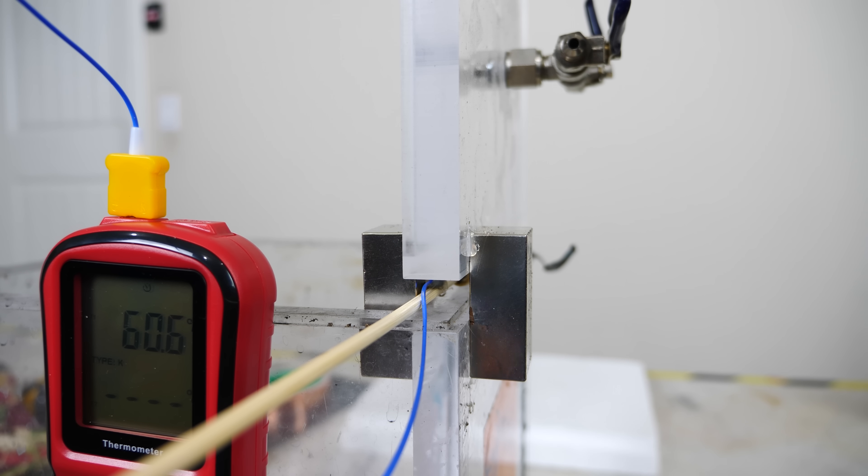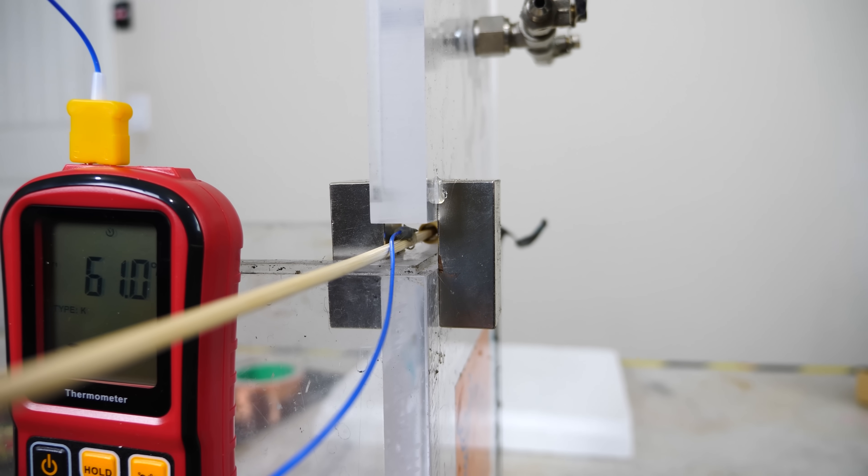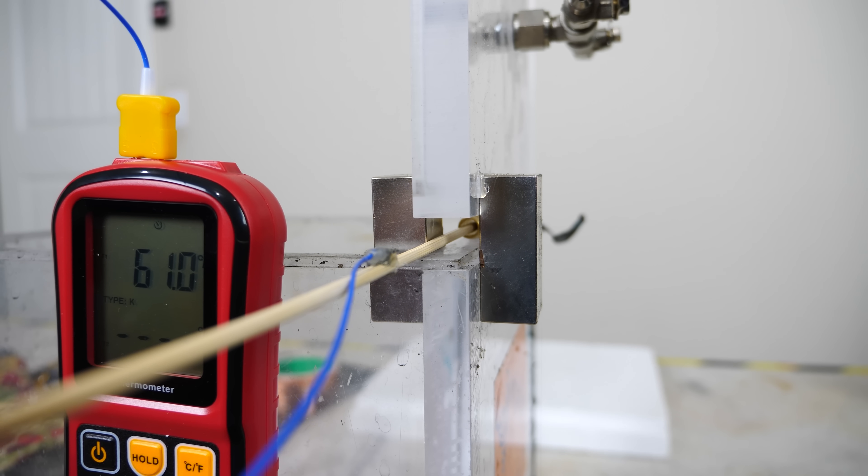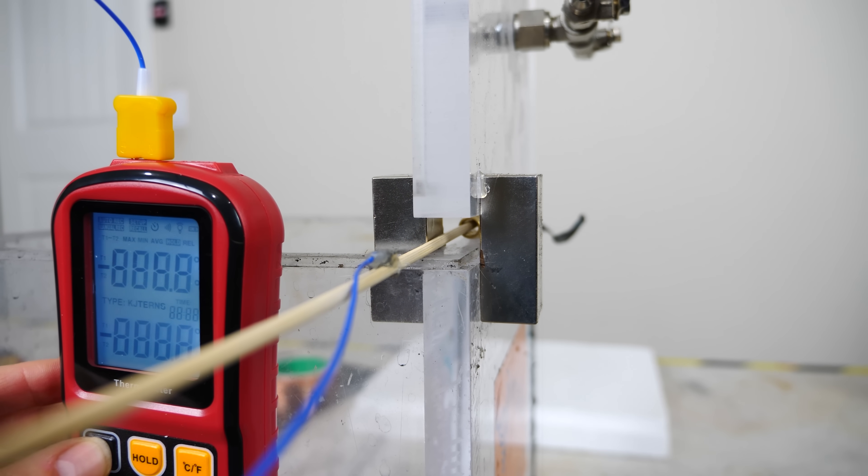And the reason that gadolinium works so well for this is because it has a large change in magnetization right when it transitions from being paramagnetic to ferromagnetic. This is right around 68 degrees Fahrenheit. It's called its Curie point.